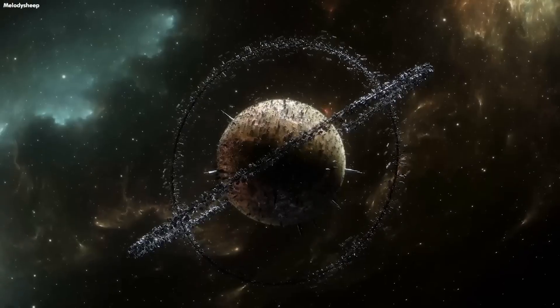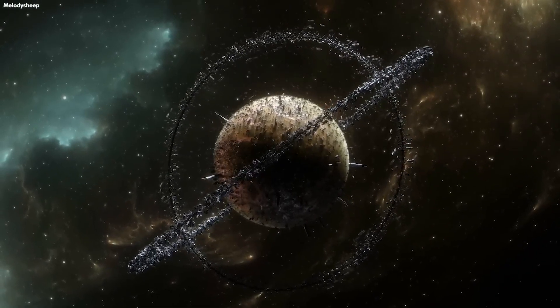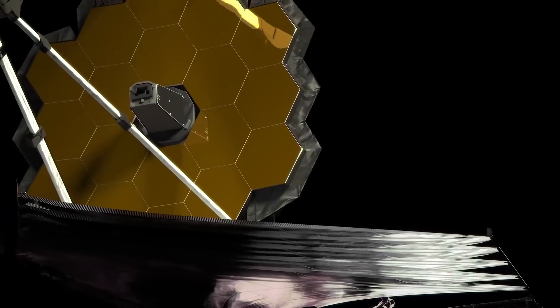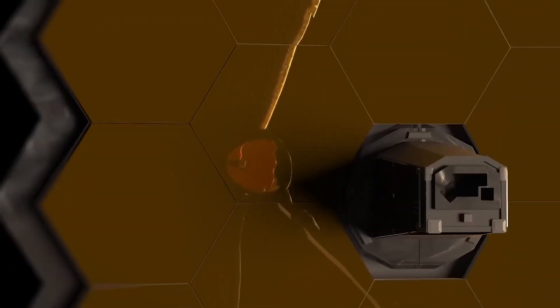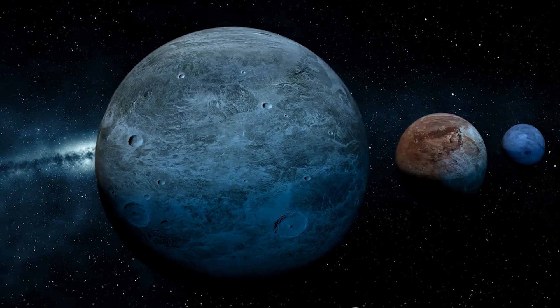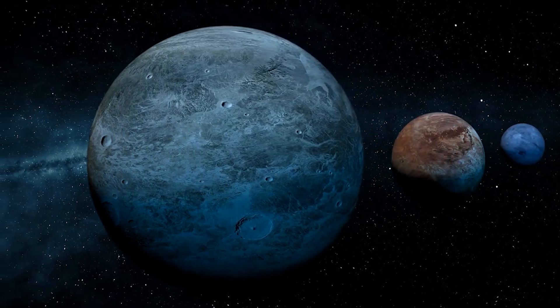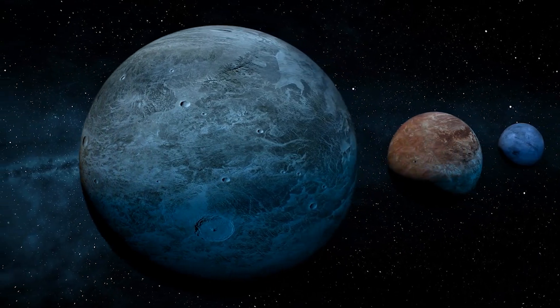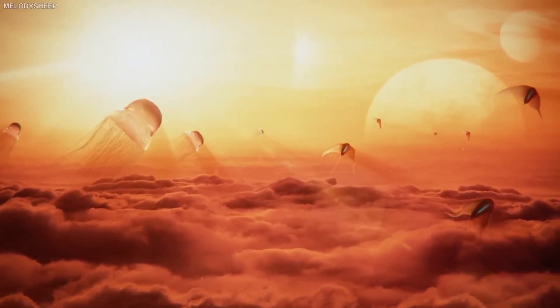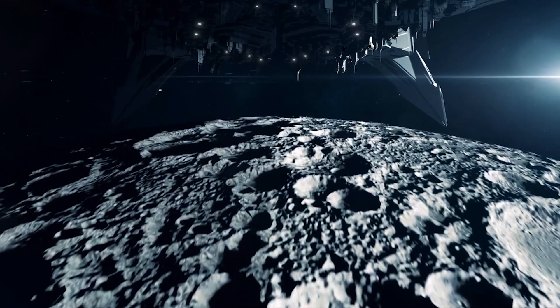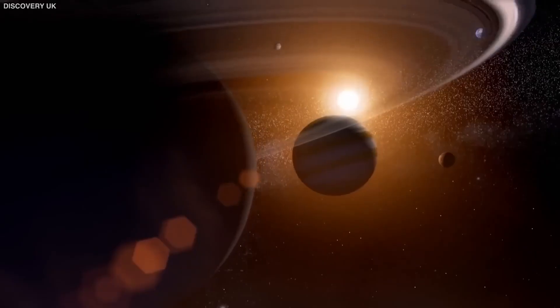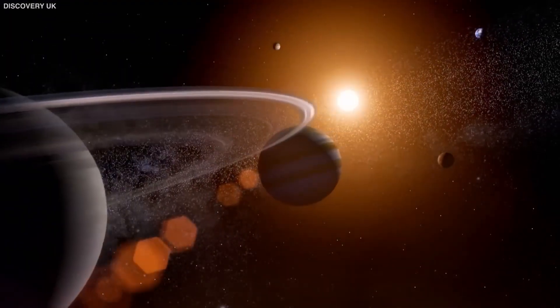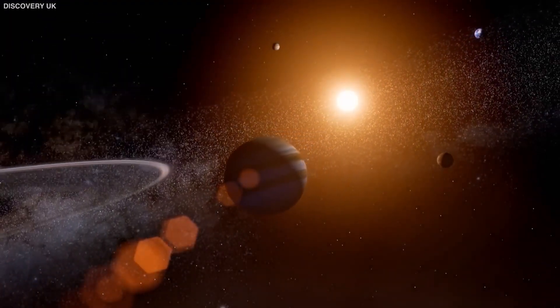James Webb Telescope shocking discovery on Proxima b. The James Webb Telescope was developed to cater to any purpose. One of the most important purposes is to search for exoplanets that are capable of being habitable and may have alien civilizations on them. The search for aliens has been on for a long time, but scientists discovered one of the nearest Earth-like planets to hold the key to burning questions.